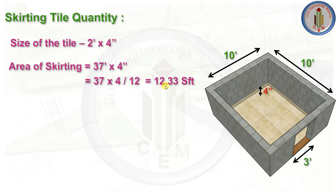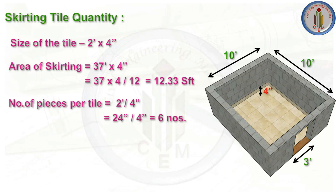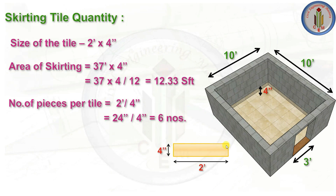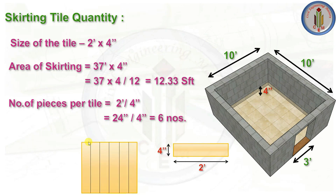The area of skirting = 37 feet × (4/12) feet = 12.33 square feet. Now, we calculate the number of skirting pieces per whole tile. One tile is 2 feet by 2 feet; converting to inches, 2 feet = 24 inches. Dividing by the skirting height of 4 inches: 24 ÷ 4 = 6 pieces. So from one 2×2 ft tile, we get 6 skirting pieces by cutting it into 4-inch strips.